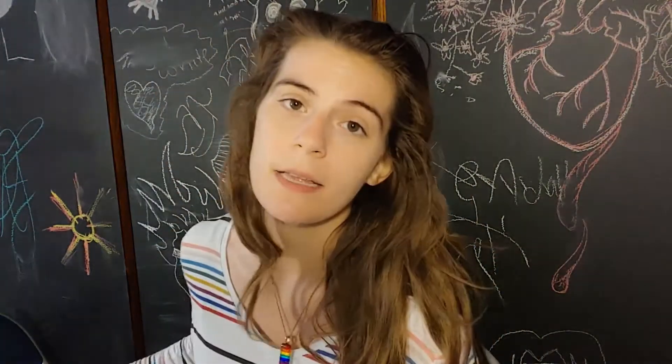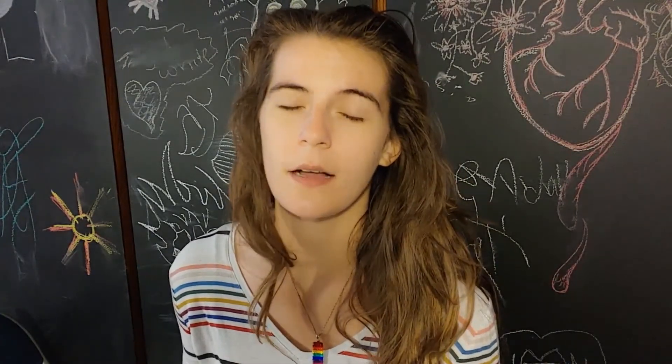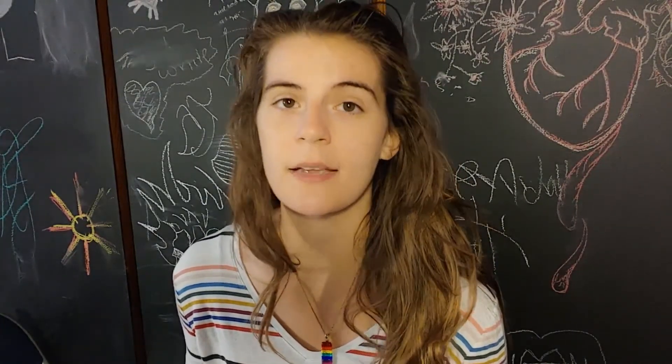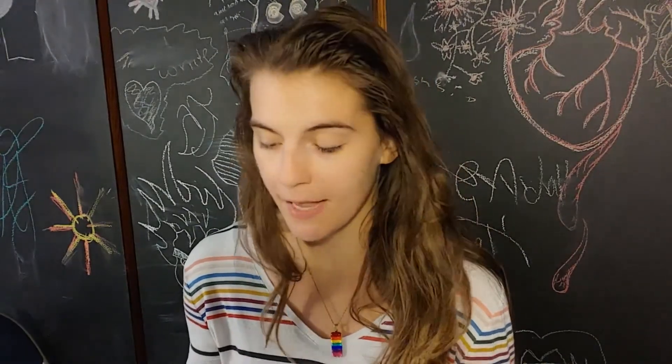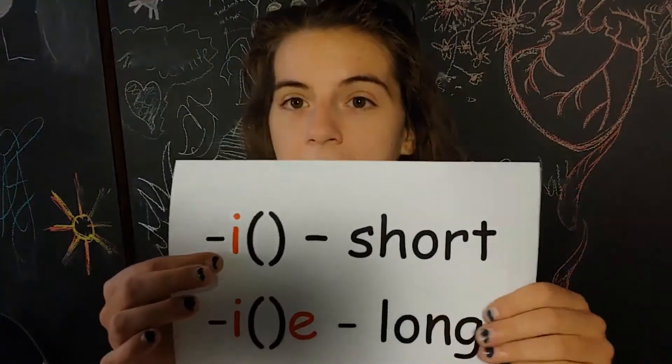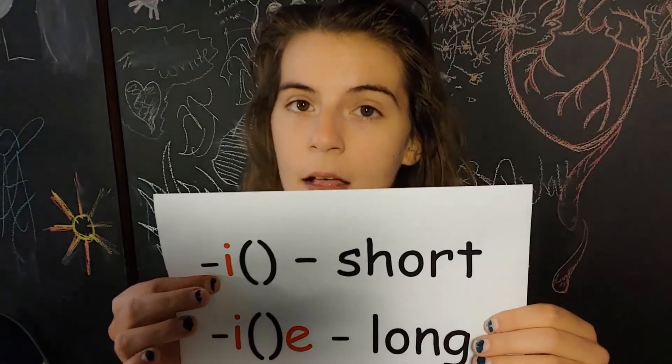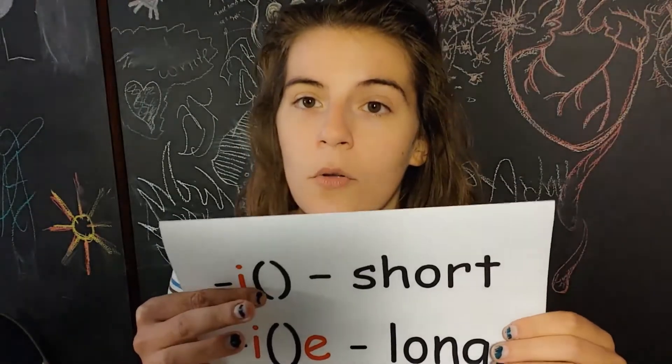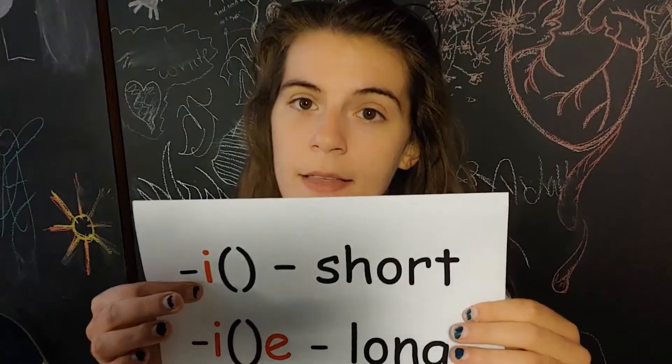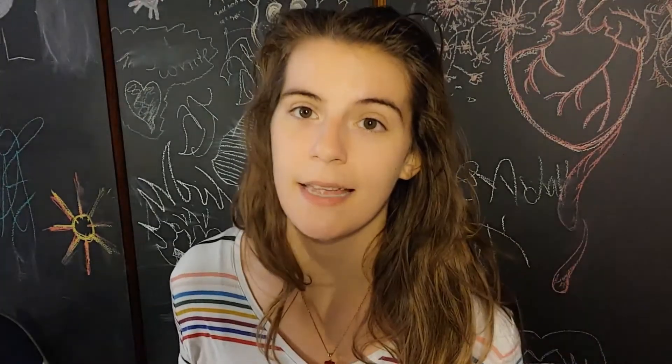So today we're going to be learning about the I sound — when to use the short I sound and when to use the long I sound. Like the other vowels we've been learning, this keeps to a similar pattern. If the I is all by itself in the word, only with consonants and no other vowels, then it's going to be the short sound: I.